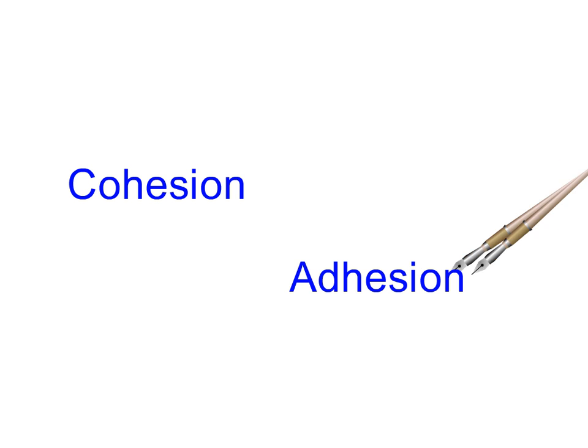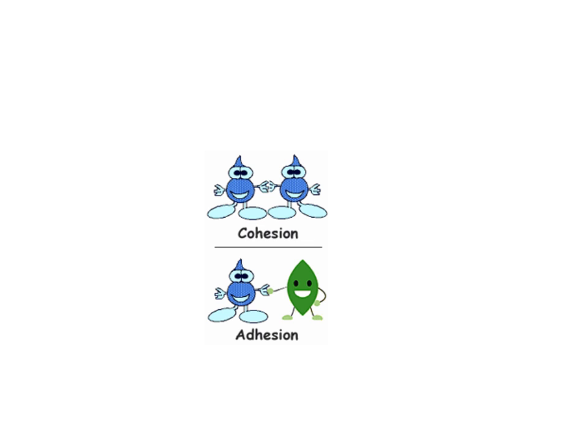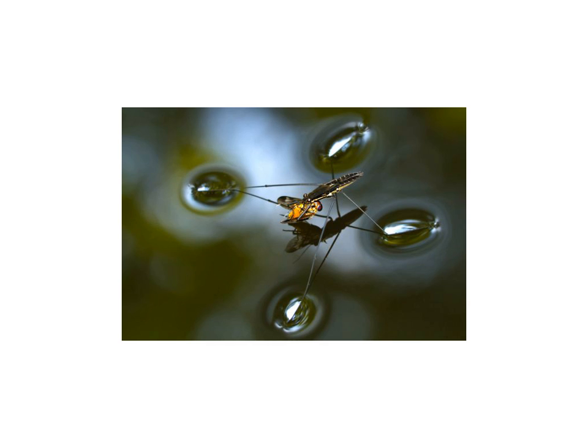Two terms that might be new to you that describe two other properties of water are cohesion and adhesion. To remember what each of these are, think of a cohesive group. If I were to ask you what is meant by a cohesive group, you would probably say a group of people that work well together. So cohesion is the ability of water molecules to stick to each other. This property provides surface tension on water. We can see the evidence of surface tension as bugs run across water without falling in.